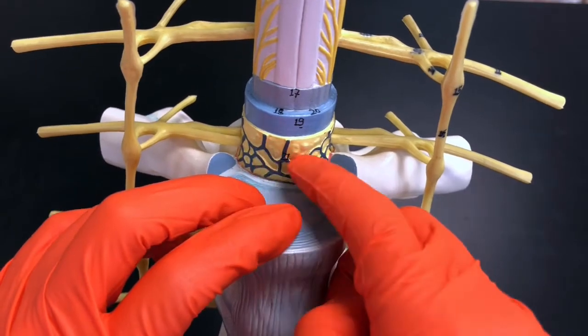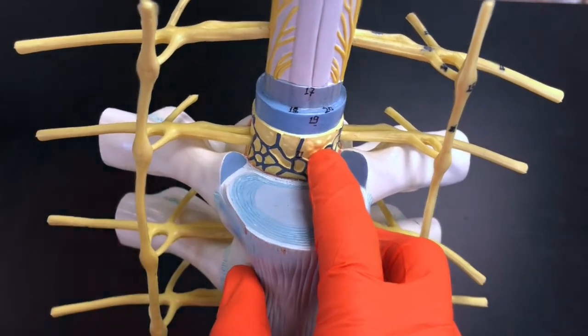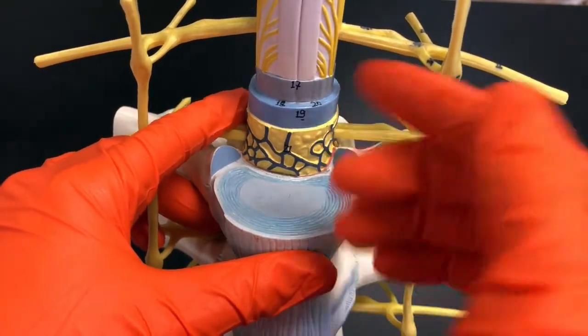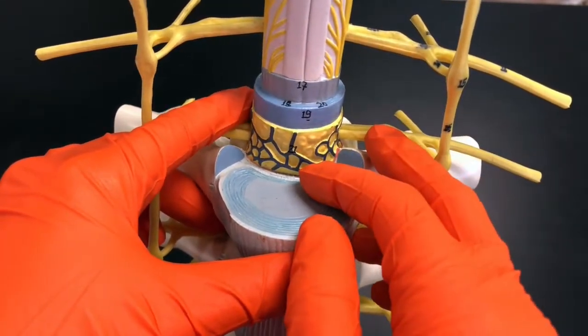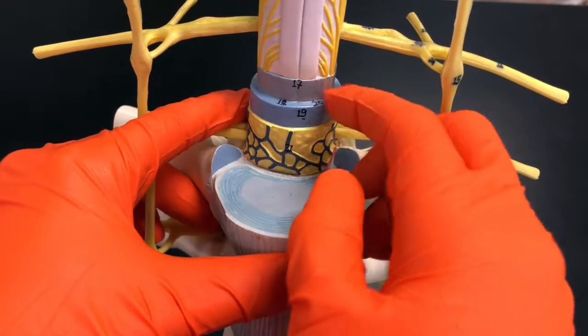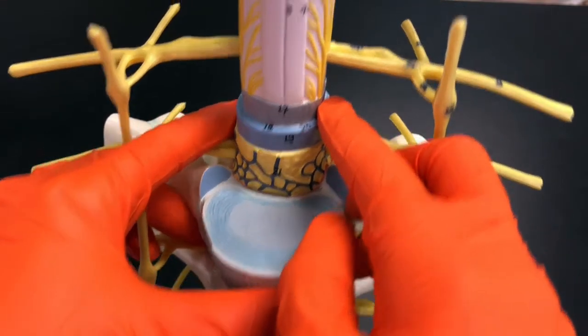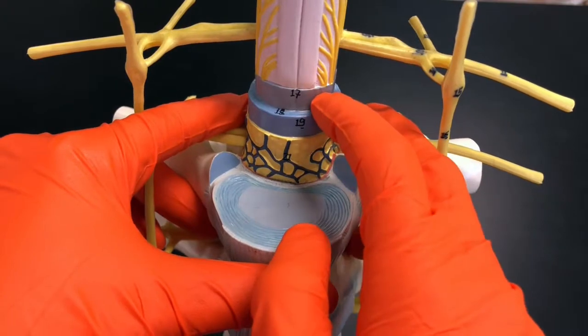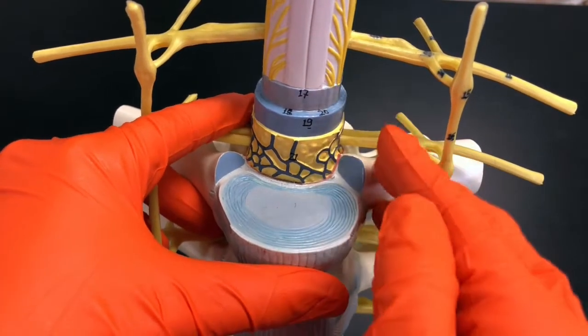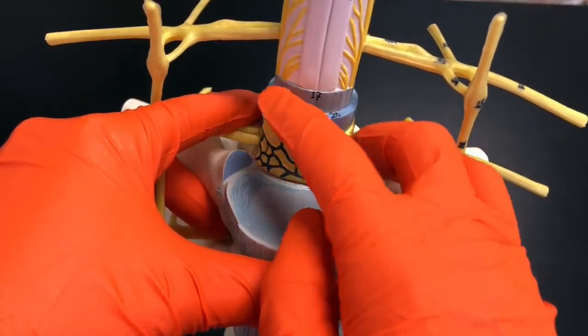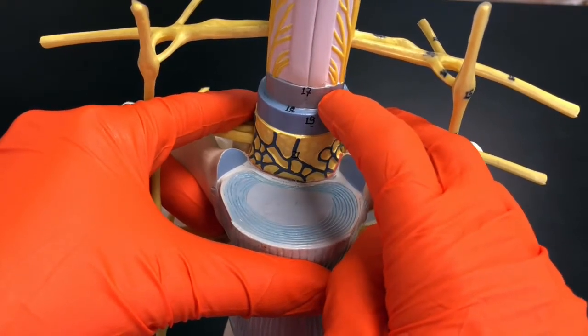Let's use our knowledge of the meningeal layers and spaces to tie this to things we might see in the clinic. In this subarachnoid space, remember this is one of the places, in addition to that central canal, where CSF flows. If we want to evaluate for a possible infection of the central nervous system, we would want to take this fluid out and send it to the lab.